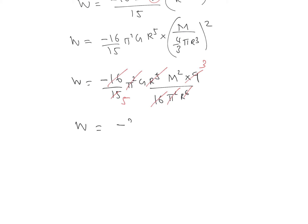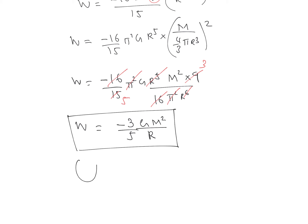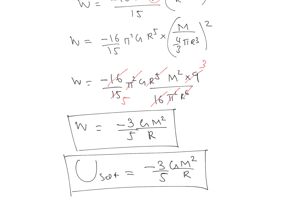The gravitational self-energy of a solid sphere is therefore −3GM²/(5R). This means that if you supply this much energy to a solid sphere, you can separate it into an infinite number of small particles at infinite separation.